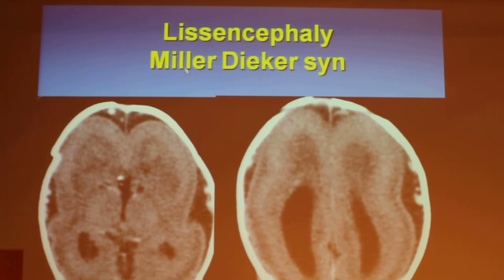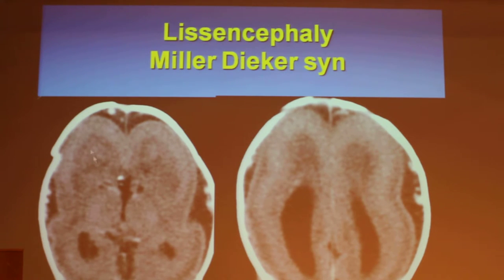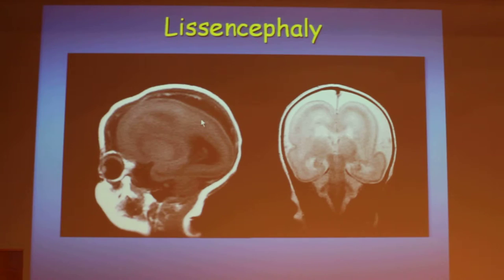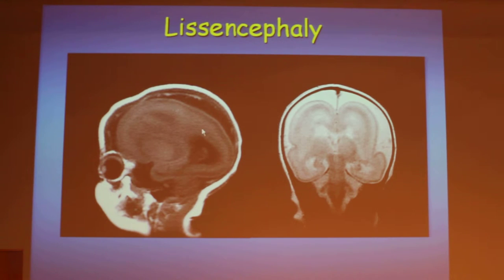On CT in the Miller-Dieker syndrome, again the figure-of-eight brain, and we can see that the cortex is definitely abnormal even though this is just a CT. On MR, very flat, smooth outline of the brain tissue, and on coronal imaging, the figure of eight.